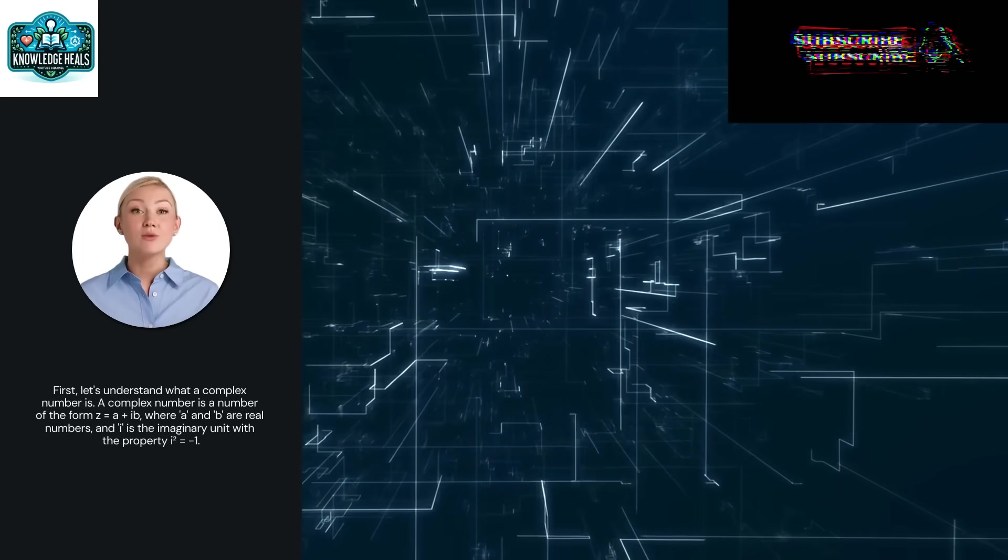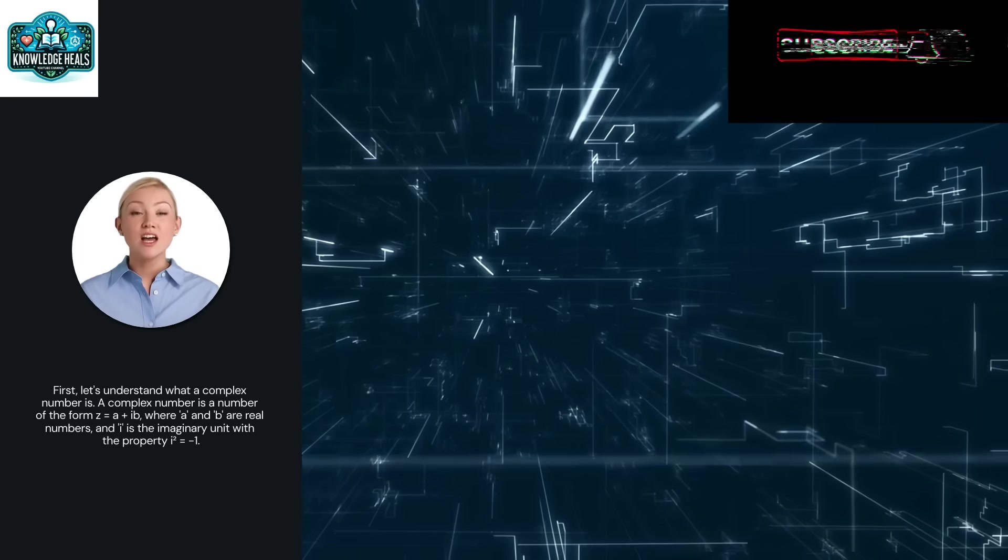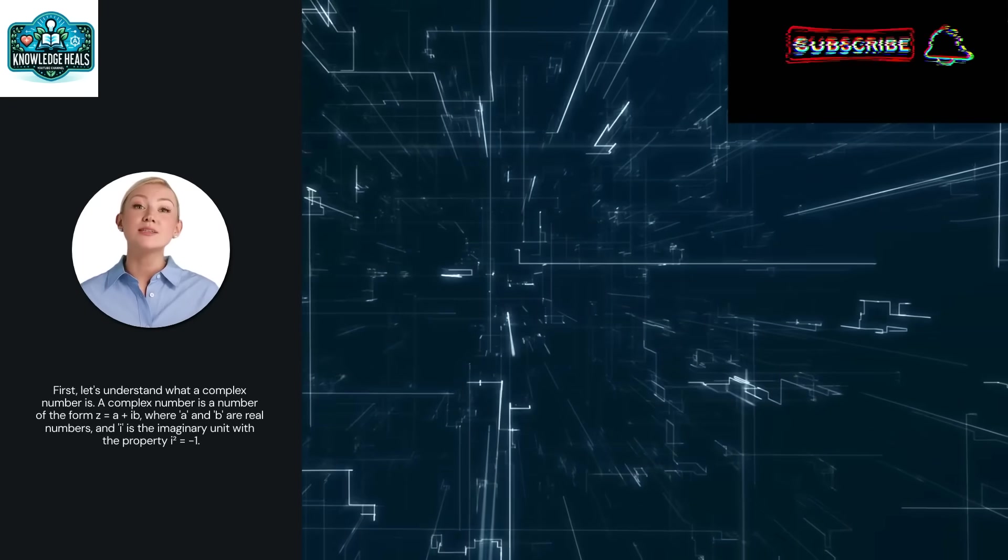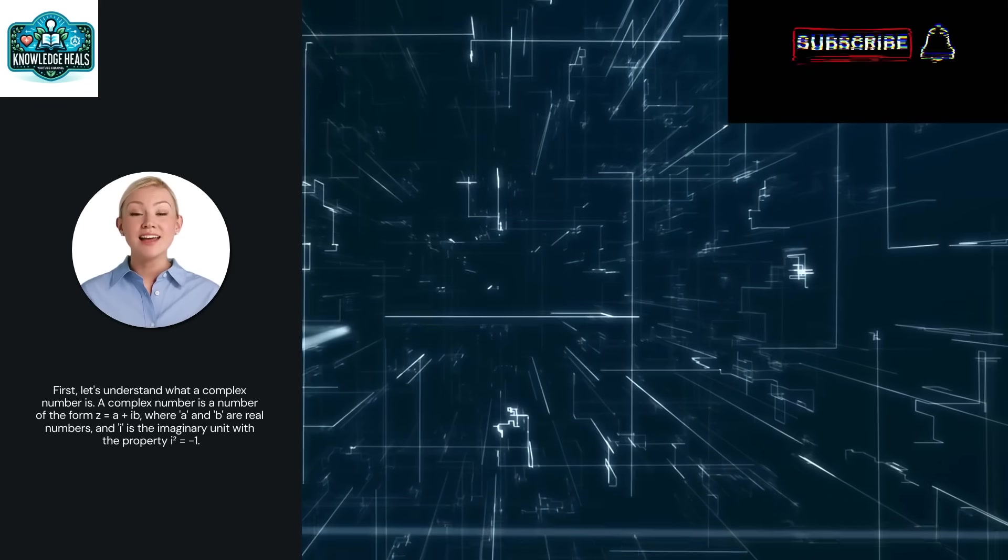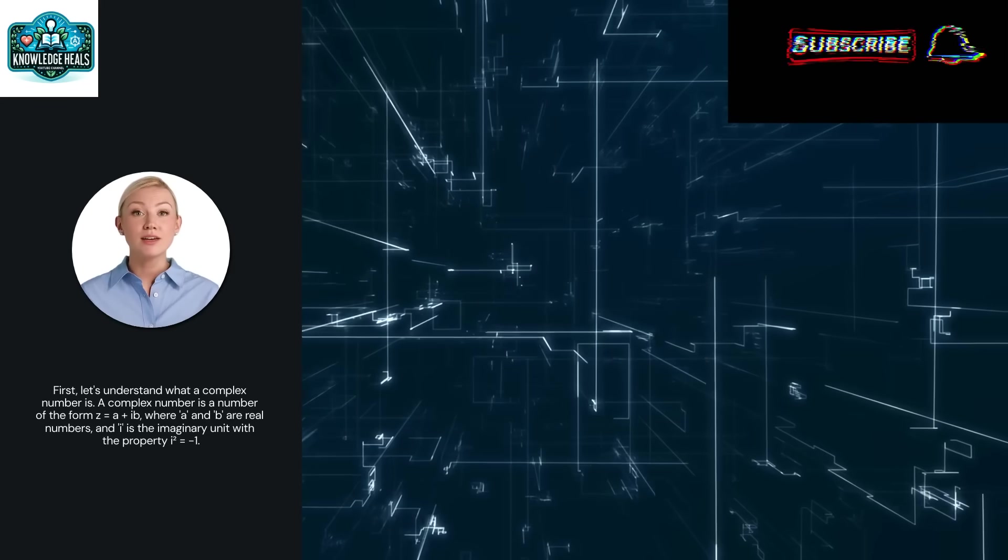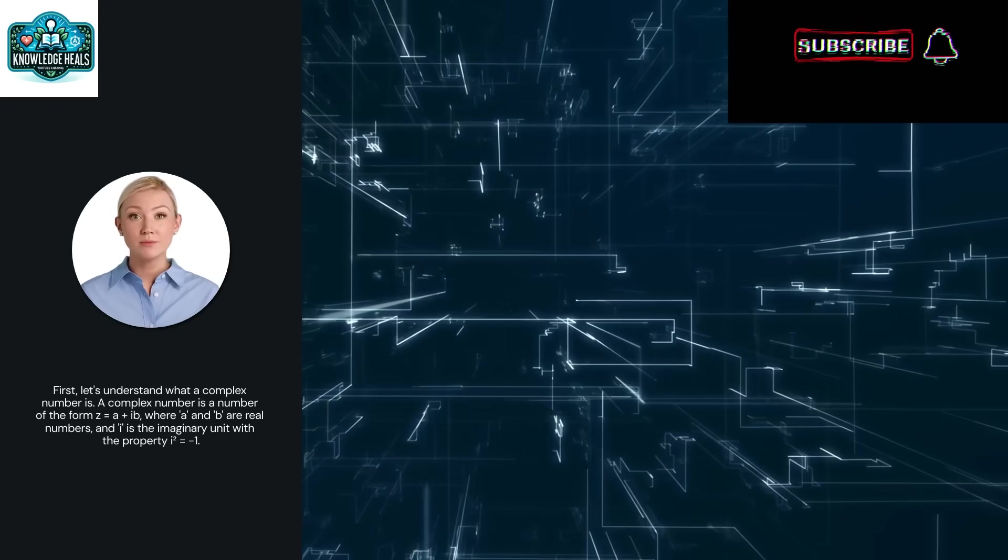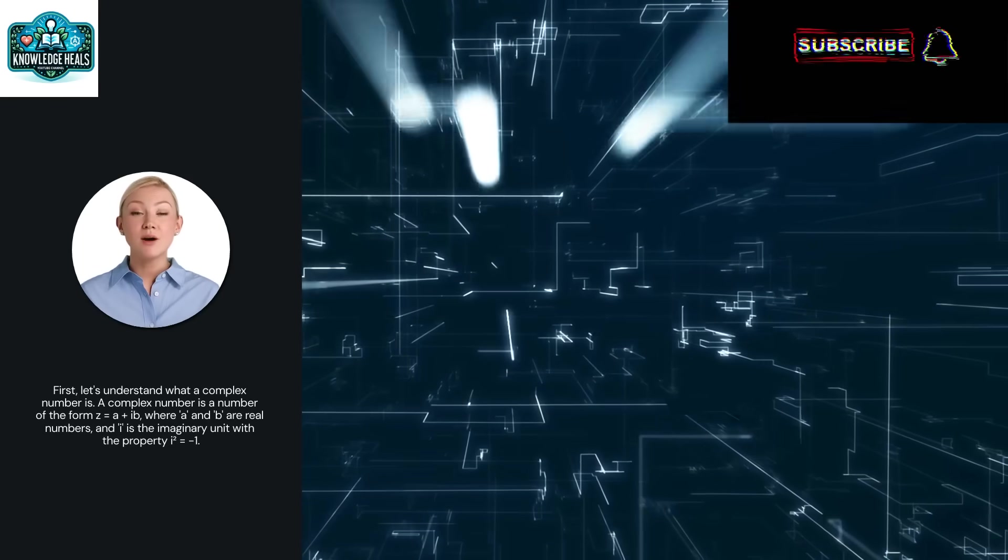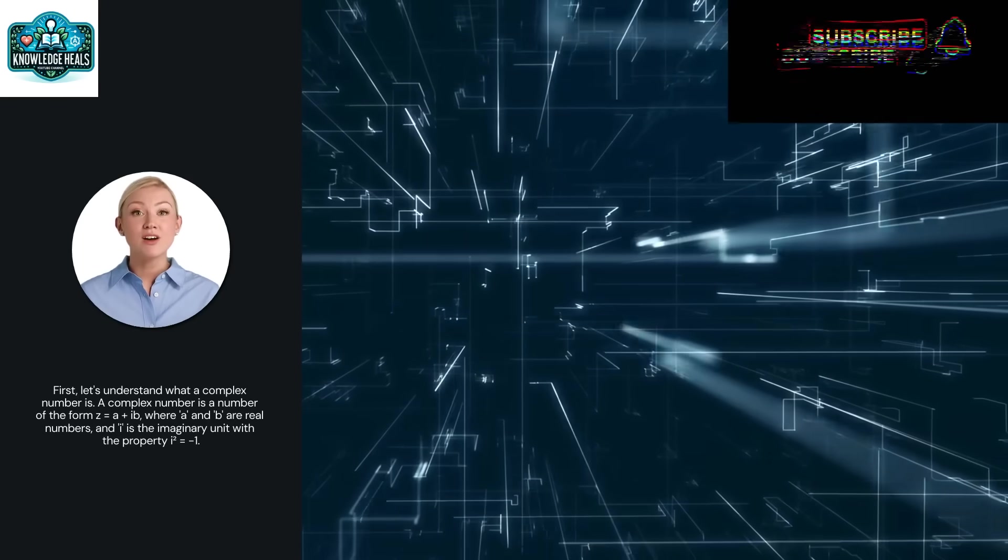First, let's understand what a complex number is. A complex number is a number of the form Z equal to a plus IB, where A and B are real numbers, and I is the imaginary unit with the property I squared equal to minus 1. Here, A is called the real part, and B is the imaginary part of the complex number.